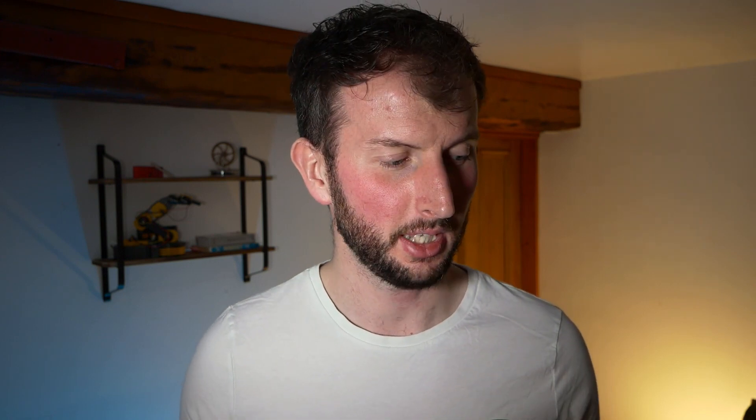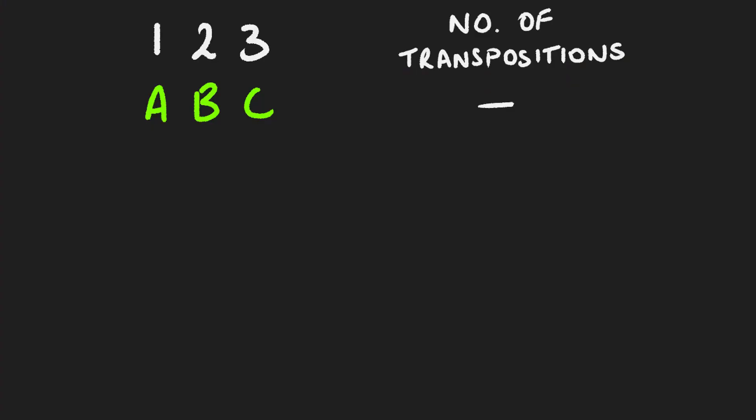I've arranged the permutations in a way that the column the permutation is in within this table corresponds to the column it's in within the matrix. So for instance, A, B, C is A1, B2, C3. Now let's have a look at what are called transpositions. Transpositions is just a fancy word for swapping two of the elements in the arrangement. So if we go from A, B, C to A, C, B — that's one transposition because we've swapped B and C.